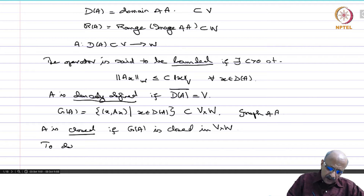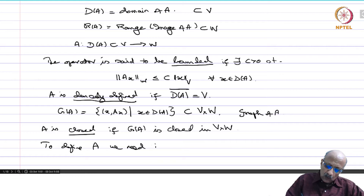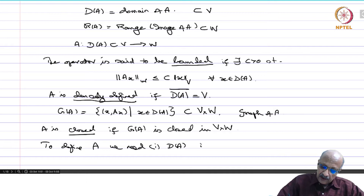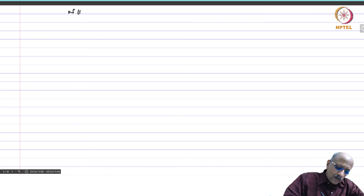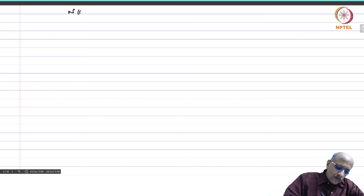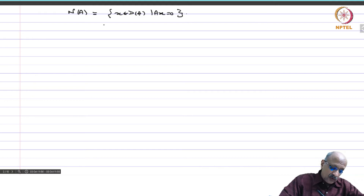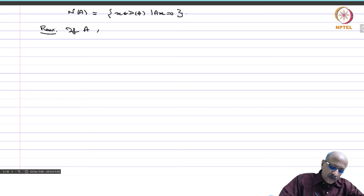To define an operator, we need to specify two things: one, D(A) — where it is defined — and two, the action A(x) for every x in D(A). Then the null space N(A) equals the set of all x in D(A) such that Ax = 0. Unlike a continuous linear operator, one cannot say that N(A) is automatically closed; however, if A is closed, then N(A) is closed.